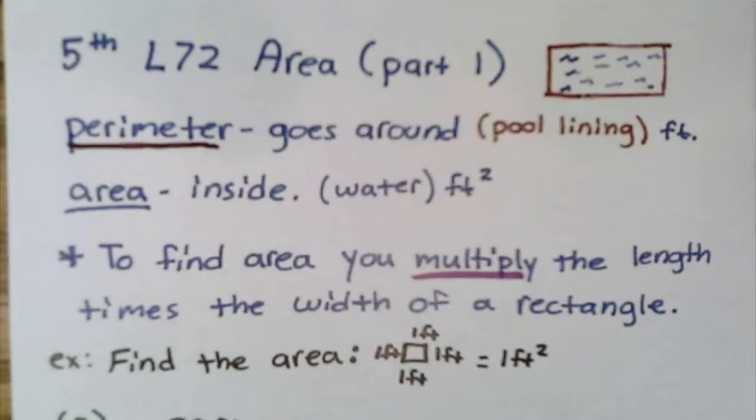Hello fifth graders, and welcome to Lesson 72 on Area, Part 1. Perimeter is the word we use to describe what goes around an object. If I had a pool here—pretend this is an in-ground pool—that would be like the pool lining that goes around the pool.